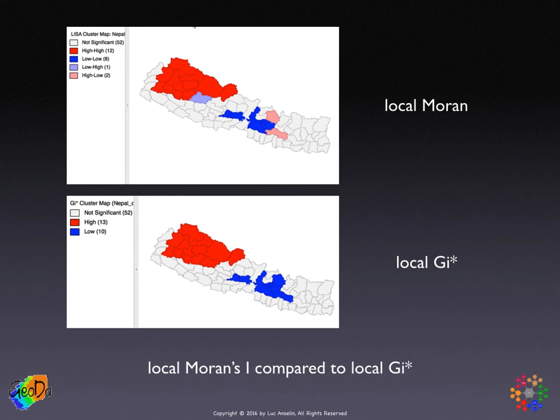One side effect is that you can use the local GI star statistic as a form of local joint count statistic. Next, we close with some issues and interpretation matters.